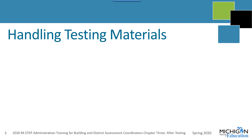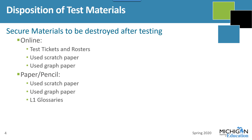In this next section, I will discuss handling test materials, including both secure and non-secure materials. There are some secure materials that don't have to be sent back to the scoring contractor, but can't just be left hanging around the school. These are the secure materials that have to be securely destroyed at the school or district. By securely destroyed, that means shredding the materials so that they cannot be seen or put back together by anyone.